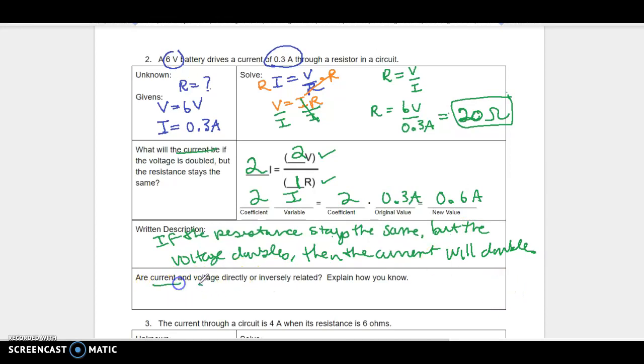All right. Okay, and our current and voltage directly are inversely related. So let's see what happened to them. So when the voltage doubled, the current doubled. So those two are going to be directly related, because if one goes up, the other one went up also. Current went up when voltage went up, those are directly related.